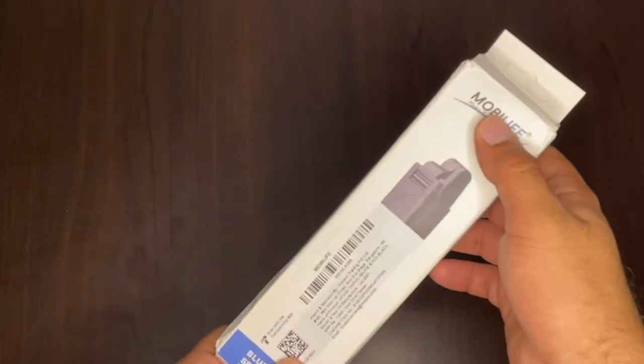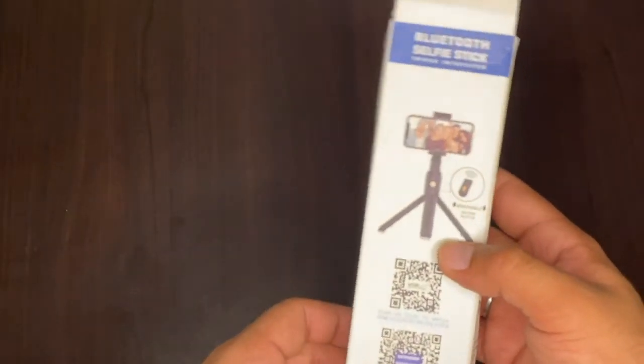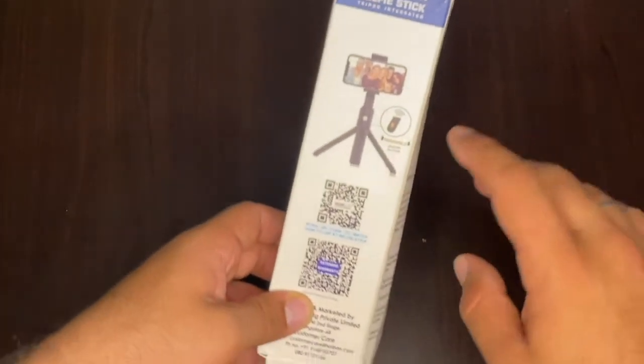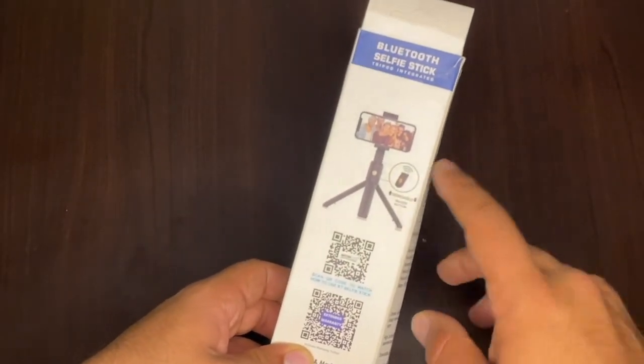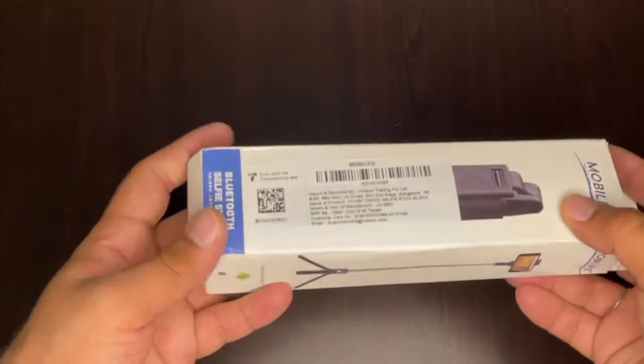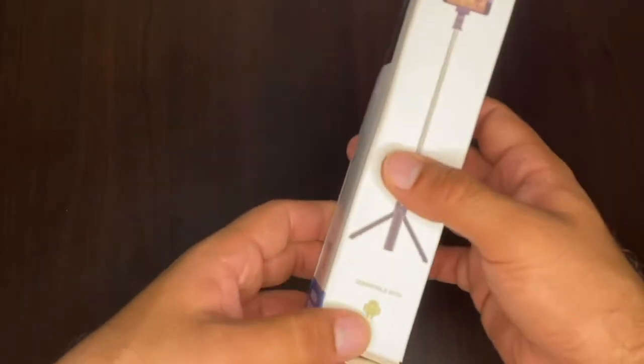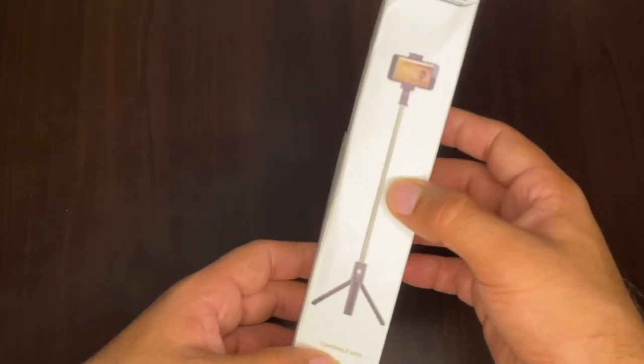This is the selfie stick. This is from MobiLive. This is selfie stick plus a tripod as you can see here and it has a detachable Bluetooth button. That's the special thing about this selfie stick. Let's unbox it. And yes, it is compatible with Android and iOS both. The most important thing.